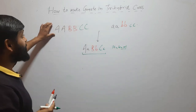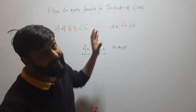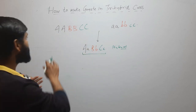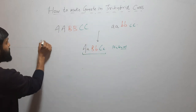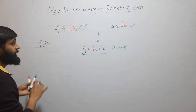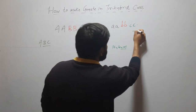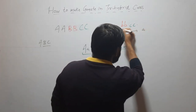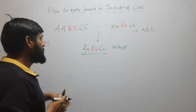Making gametes for the first parent and the second parent is very easy because they are homozygous. So in that case, all gametes will be capital A, capital B, and capital C. And in the other case, all gametes will be small a, small b, and small c, because they are homozygous.